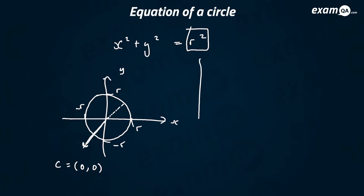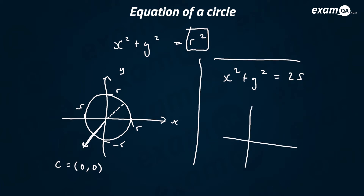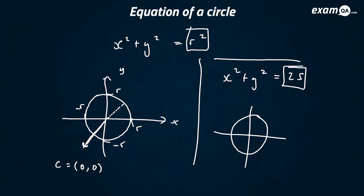A question with actual numbers would look like this: x squared plus y squared equals 25. Can you sketch the circle? Remember, the centre of the circle is always (0, 0). The radius would be the square root of 25, which is just 5. So the circle extends to 5, minus 5, etc.